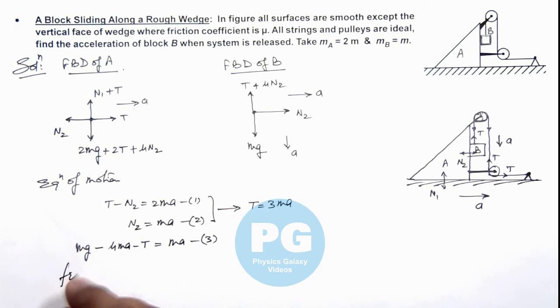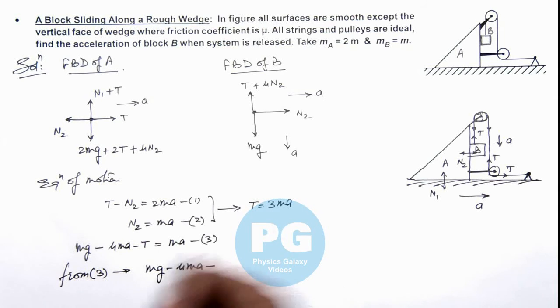You can see now from equation 3, we can write mg - μma - 3ma = ma.